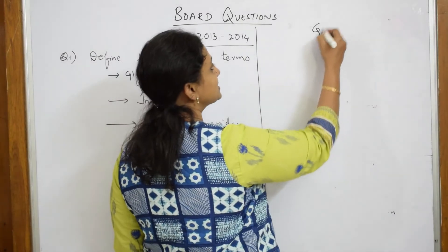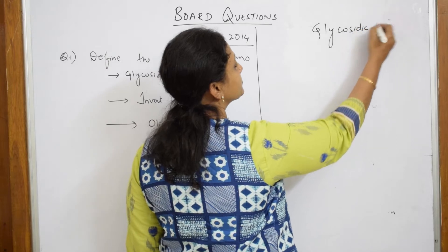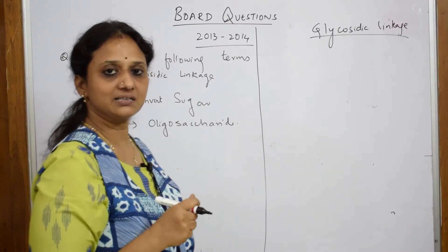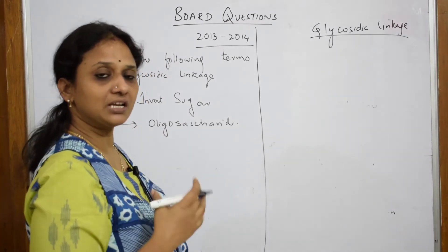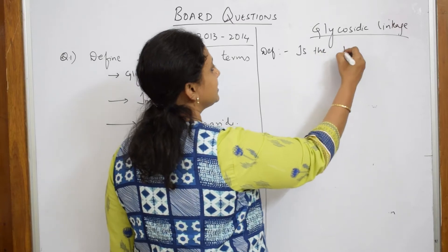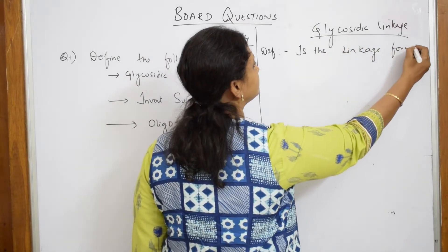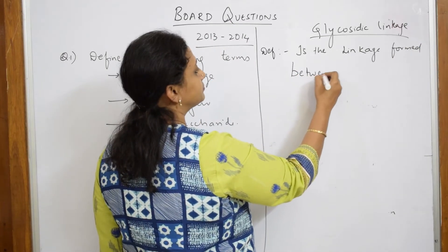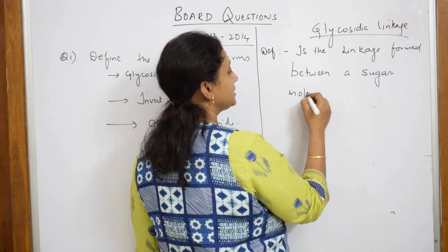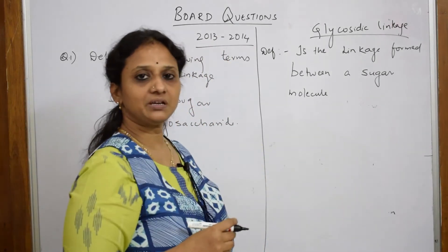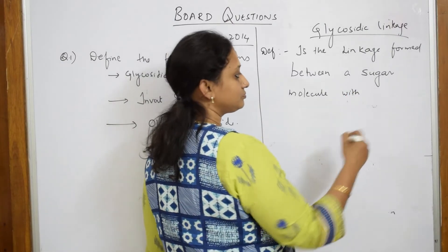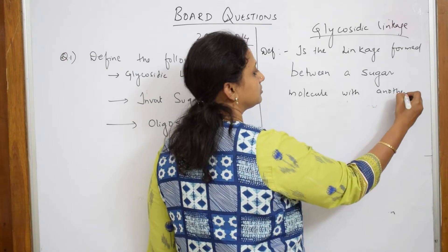When this definition is given to us, first let us write glycosidic linkage. You have to write the terminology because basically there are a few words in the marking scheme. Glycosidic linkage is the linkage formed between a sugar molecule with another carbohydrate.